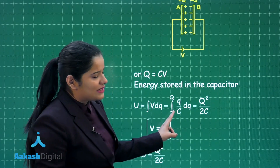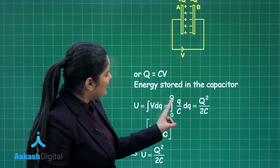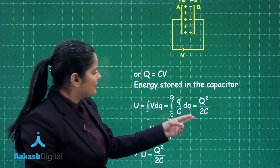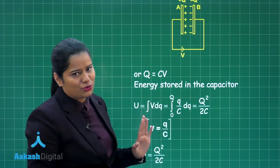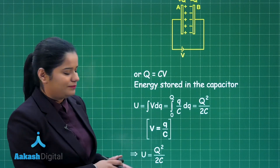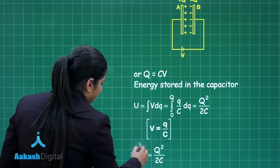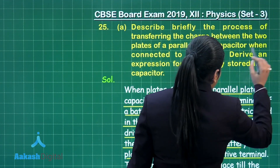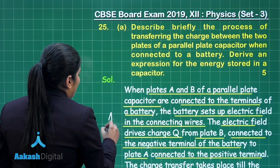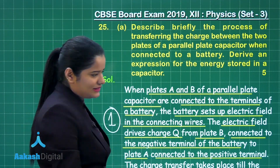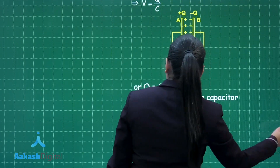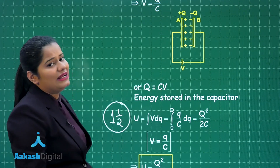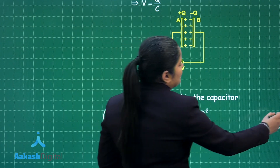Now, C is constant, so it will not get integrated. Integration of Q·DQ comes out to be Q² by 2, and when you put the limits, this comes out to be Q² by 2C. So the energy stored is simply equal to Q² by 2C. For the marking scheme: you get 1 mark for explaining the charging of the capacitor, then 1 and a half marks for the derivation of energy stored in the capacitor, giving you 2 and a half marks for this part.